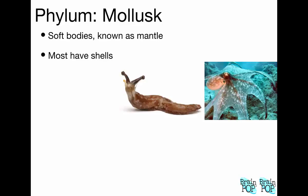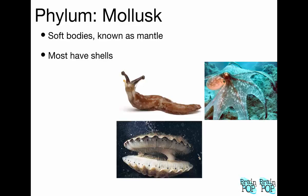An octopus is another example of a mollusk — a very complex mollusk. Octopuses, squids, and other mollusks have an unbelievable ability to camouflage themselves. They can change the color, pattern, and texture of their skin. They also have a pretty well-developed nervous system. Clams, mussels, and oysters are all mollusks — they're called bivalves, meaning two shells.